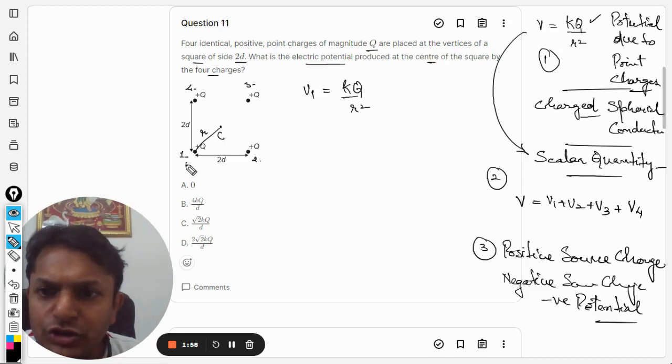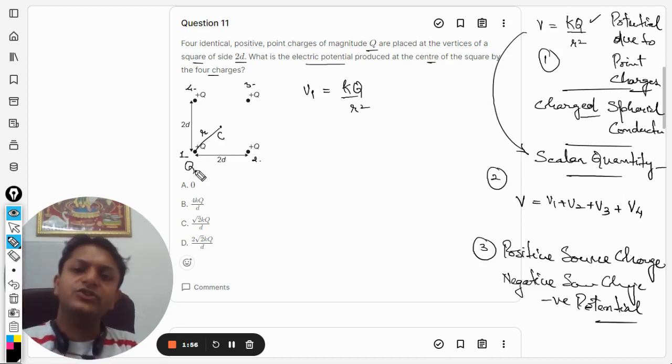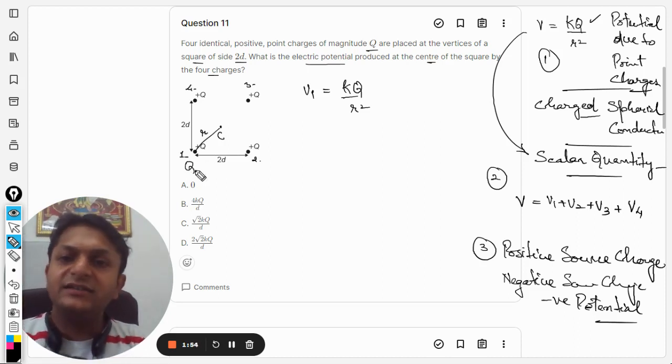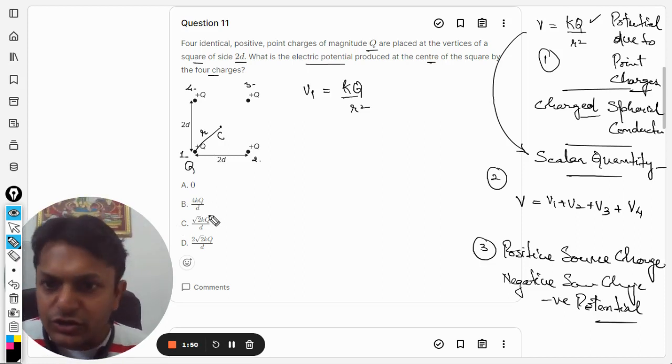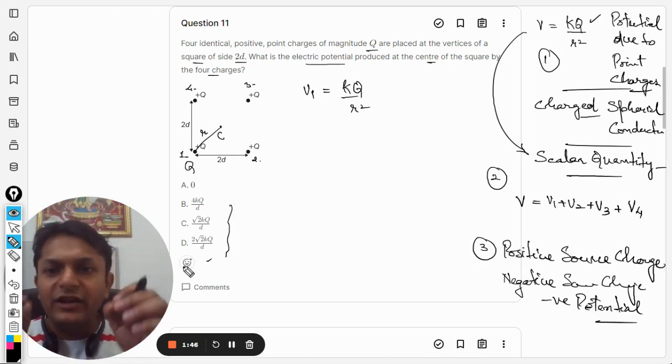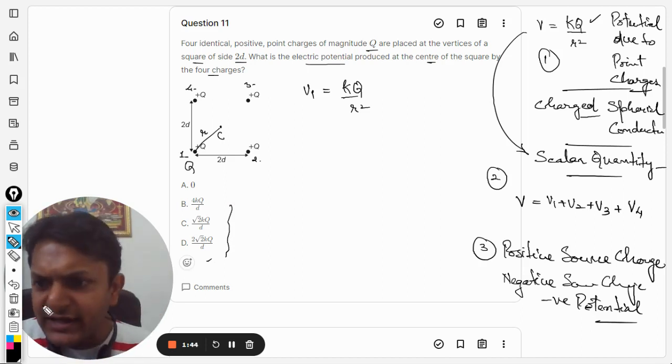Now the big thing is how to find the value of r in the terms of d, because you have the answer in the terms of d. So we have to find the value of r in the terms of d. How can I find it? Well, this is a square here.